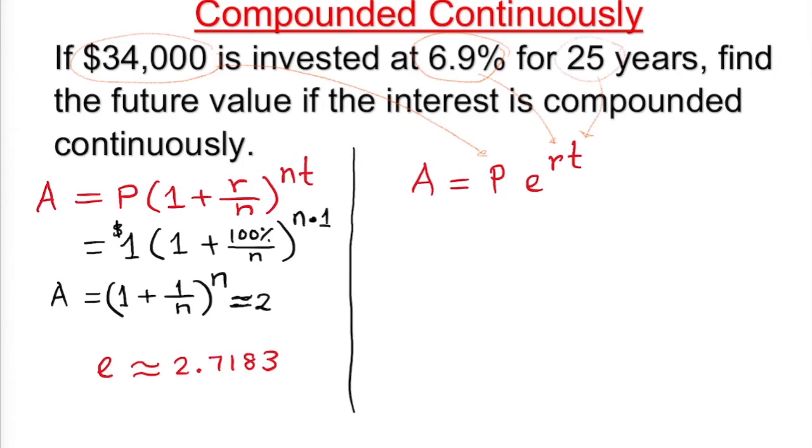So all we can do is just substitute it. So 34,000. e, I don't need to open a parenthesis here, I can just put down e to the power, r in this case 6.9 percent or you convert to decimal and times t, times t in this case is 25 years. Good. So we have everything ready.